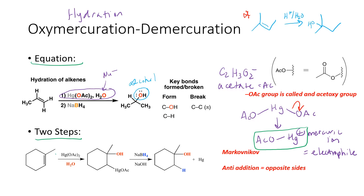After step one with mercury-2-acetate in water, we end up with an OH group on the more substituted side, and an organometallic mercury acetate bonded to the least substituted side. We're almost at our hydration product — the alcohol is already in place. The second step then uses sodium borohydride to reduce the organometallic mercury acetate and replace it with a hydrogen.